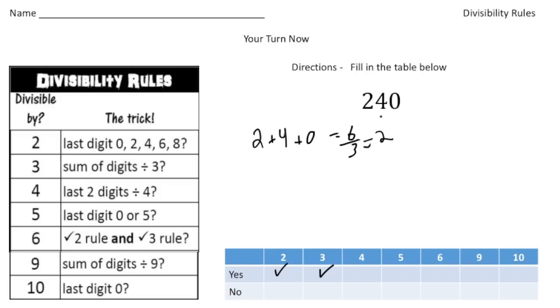The number 4 is the last two digits. And here we have 40. And 4 can go into 40. So that's a yes. The rule for 5, if it ends in a 0, it works. Or 5, and this one ends in a 0. So that's a yes. The rule for 6 is if both 2 and 3 are factors. And that's a yes. So it's going to be a yes for that one.